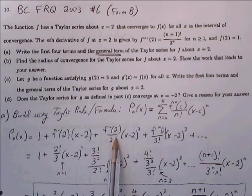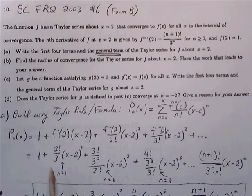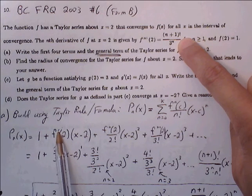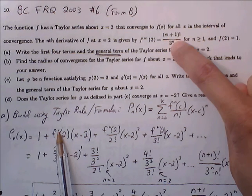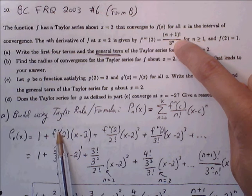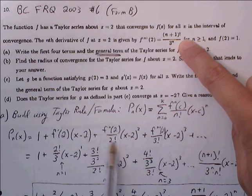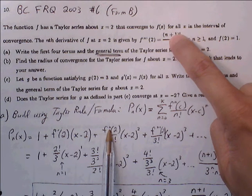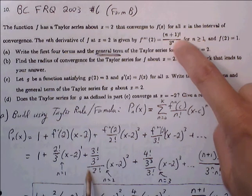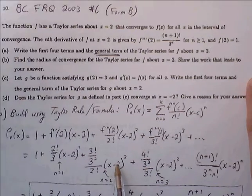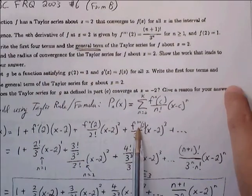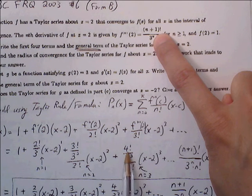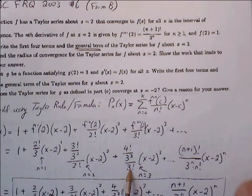We build the polynomial term by term. For f'(2), plug n=1: (1+1)!/3¹ = 2/3. For f''(2), plug n=2: 3!/3² = 6/9 = 2/3; divided by 2! gives the coefficient for (x−2)². For f'''(2), plug n=3: 4!/3³; divided by 3! gives the coefficient for (x−2)³.